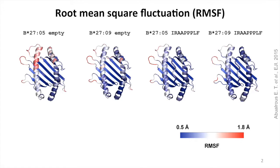To investigate the effect of this single amino acid difference on the flexibility of the binding groove, we studied both proteins using molecular dynamics simulation. For each protein we simulated both the peptide-bound and peptide-free states. When the peptide is bound, both proteins show a stable binding groove. When the peptide is absent, B2705 shows increased flexibility, especially at the F-pocket region, while B2709 shows a stable binding groove similar to that of the peptide-bound form.